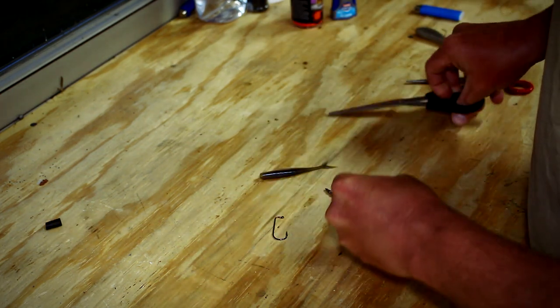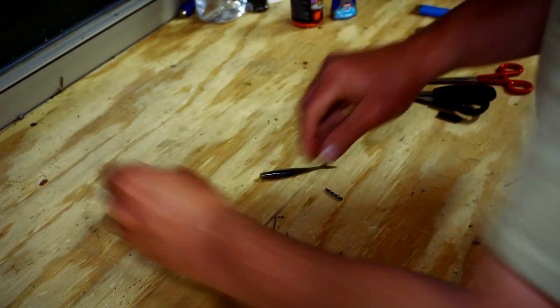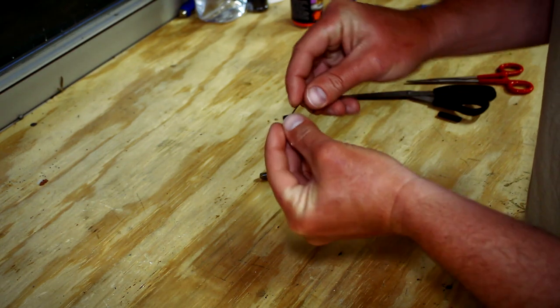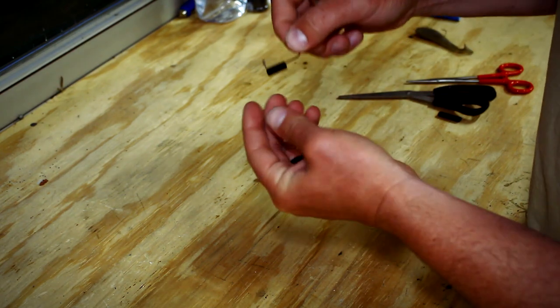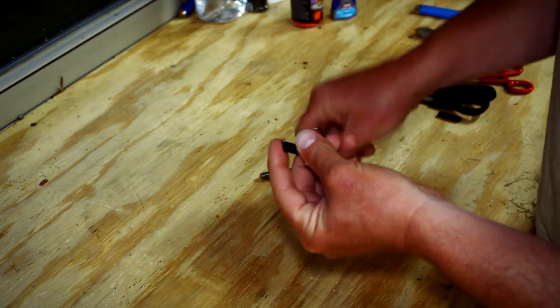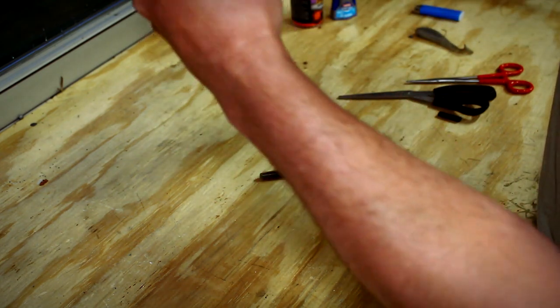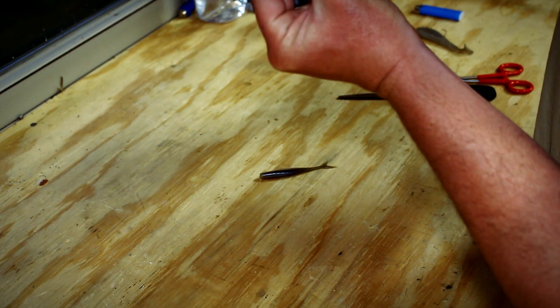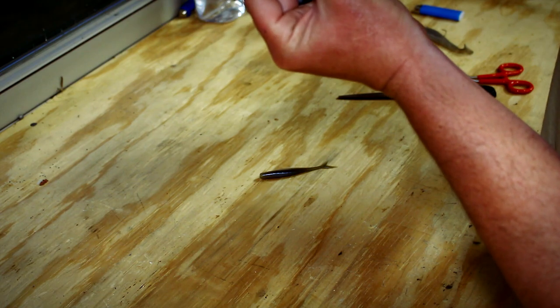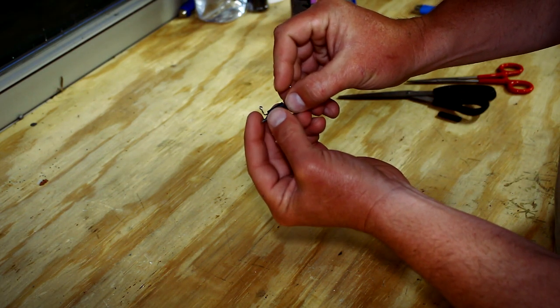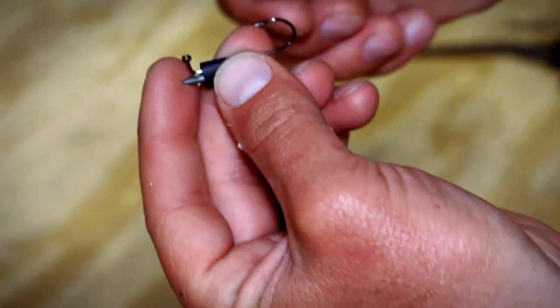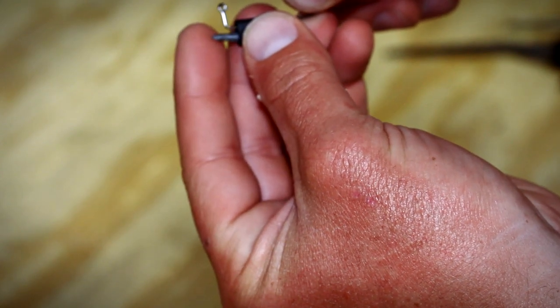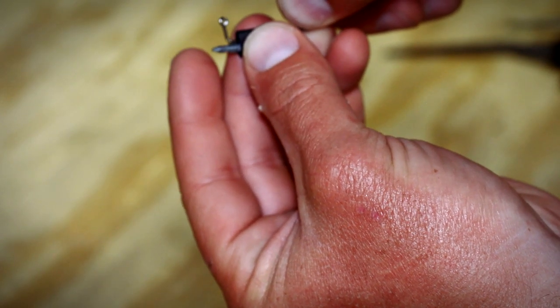Then you want to take your hook and you want to thread your shrink wrap on the hook like that. Now here's the biggest part: when you hang your nail weight in there, you want the point of the nail weight facing out. I typically just run it out just past the bend of the hook. As you can see, I want the point of the nail weight just past the bend of the hook about an eighth of an inch.